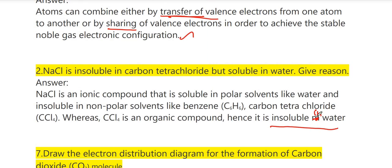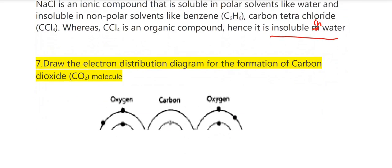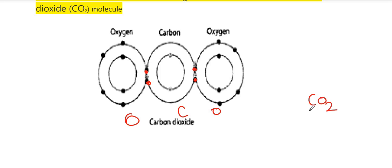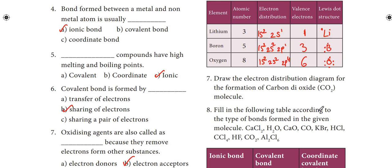Seventh question: draw the electron distribution diagram for the formation of carbon dioxide (CO2) molecule. Oxygen's diagram with 2 electrons, then carbon in the middle, then oxygen — with 2, 2 sharing on each side forming double bonds. This gives the CO2 structure.